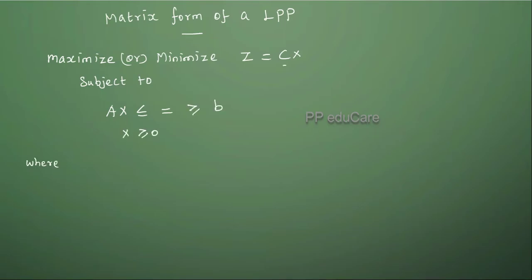Here the variable matrix X equals X1, X2, etc., Xn. Suppose we have n number of activities and the objective coefficient C is equal to C1, C2, etc., Cn.